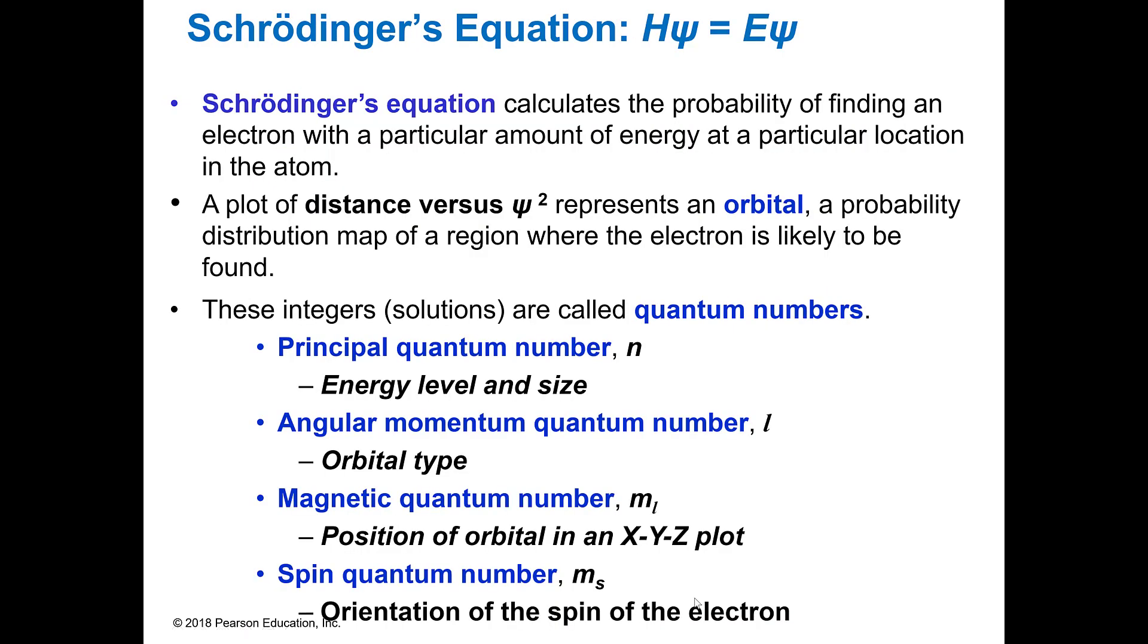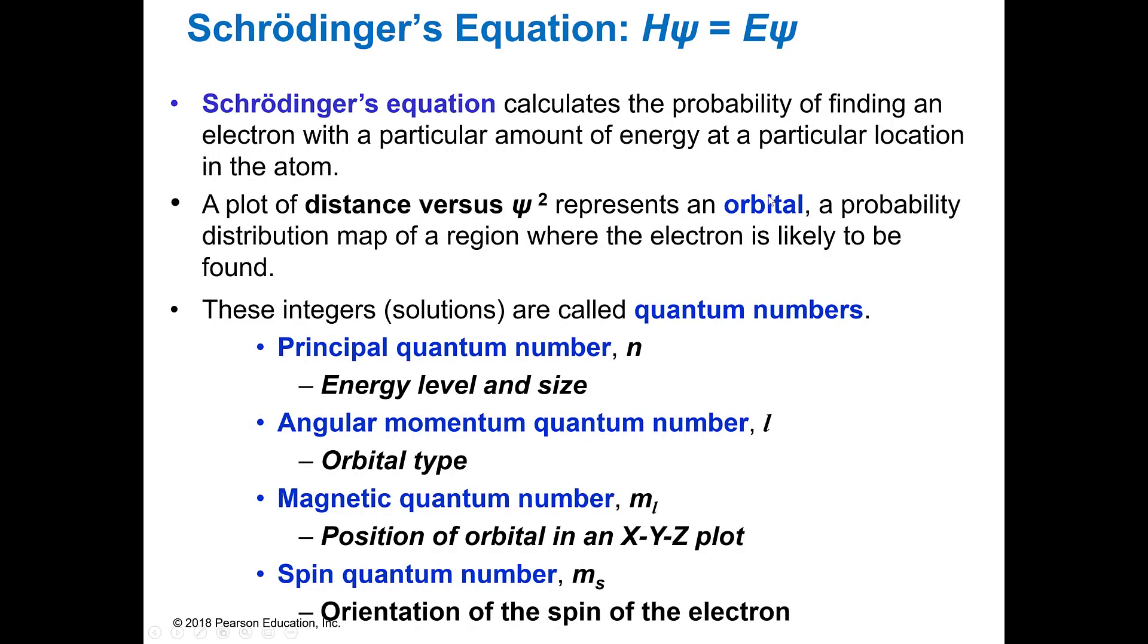So Schrödinger came up with an equation. And in Schrödinger's equation, he calculated the probability of finding an electron with a certain amount of energy at a certain place. And he plotted the distance from the nucleus versus this psi squared, and that represented the orbital. And I actually got to do this way back in the day when I was in undergraduate in organic chemistry. And we used dot printers, dot matrix printers. And it actually did the dots where that electron could be and then came up with this cloud shape. And so it was really cool to see how this came about.